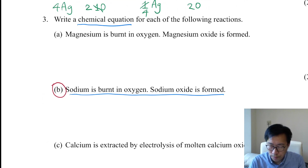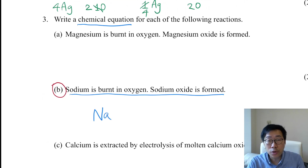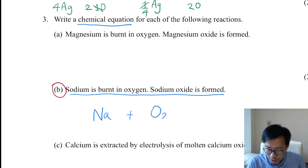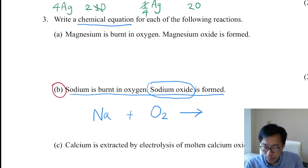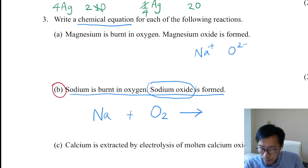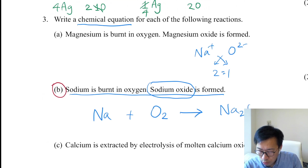Sodium is burned in oxygen. Sodium is a metal, so you write the chemical symbol Na. Oxygen is a covalent non-metal, so you write the molecular formula O2. Then sodium oxide is the product — it is an ionic compound. Applying ionic bonding: Na+ and O2-, interchange the numbers, you get the ratio 2 to 1. So the formula of sodium oxide is Na2O.